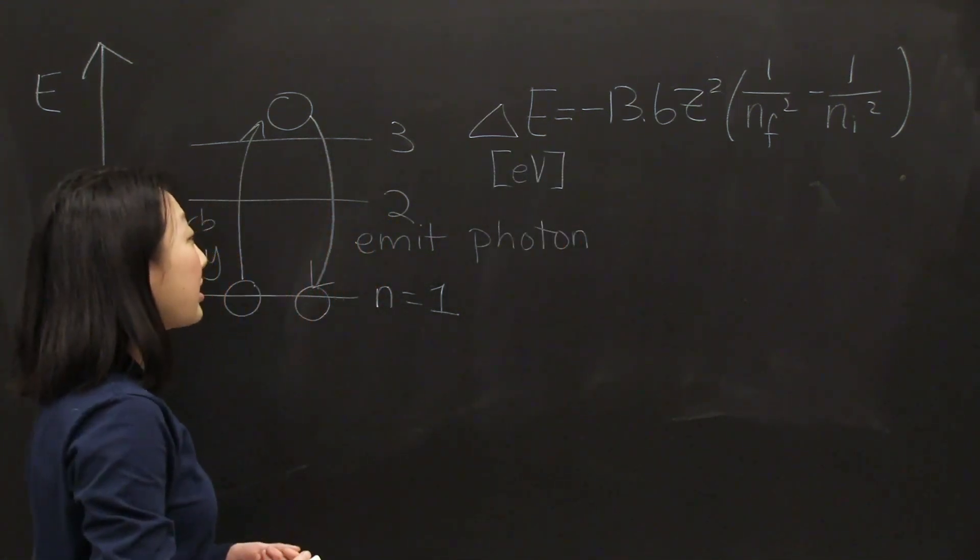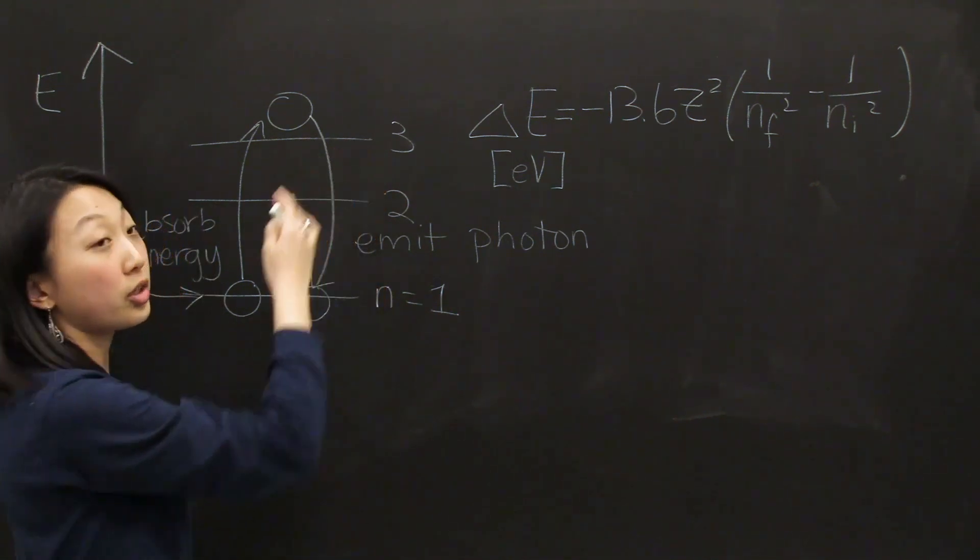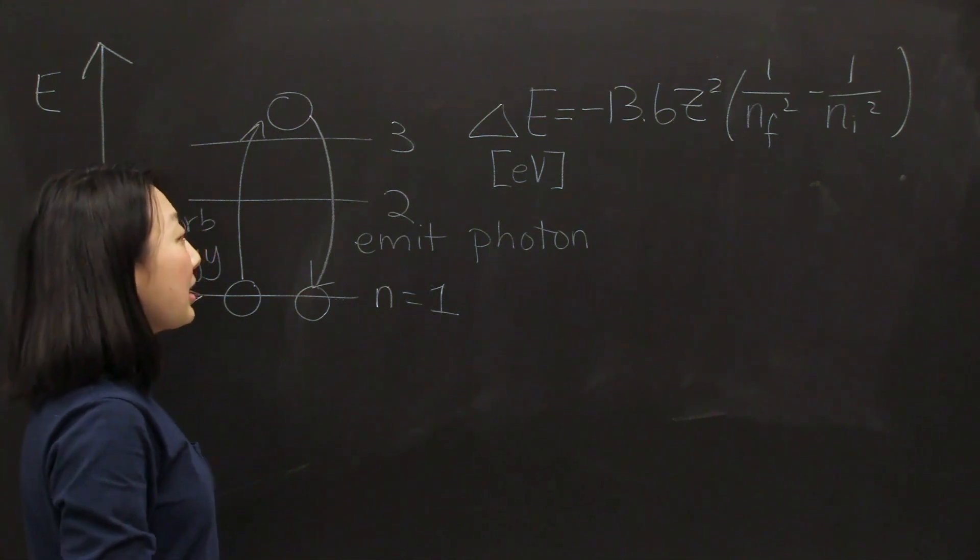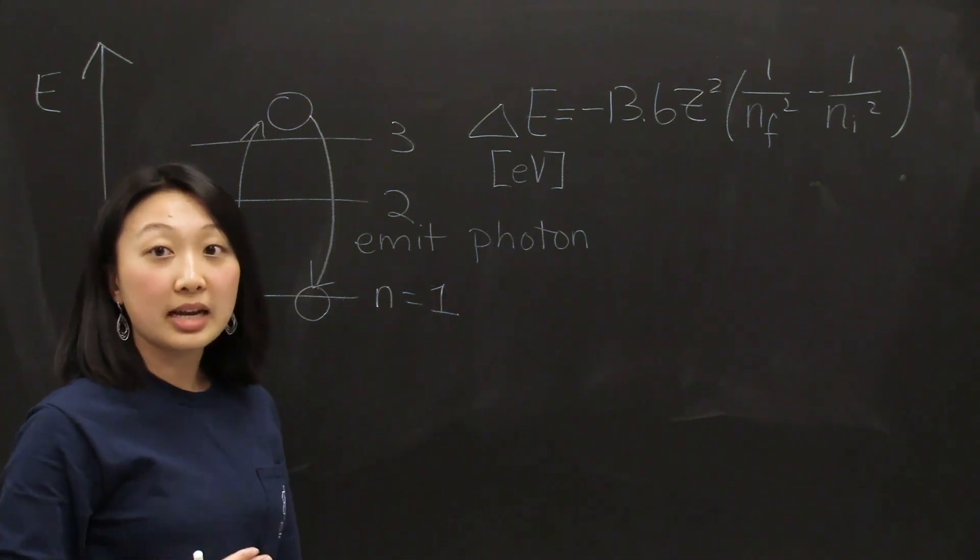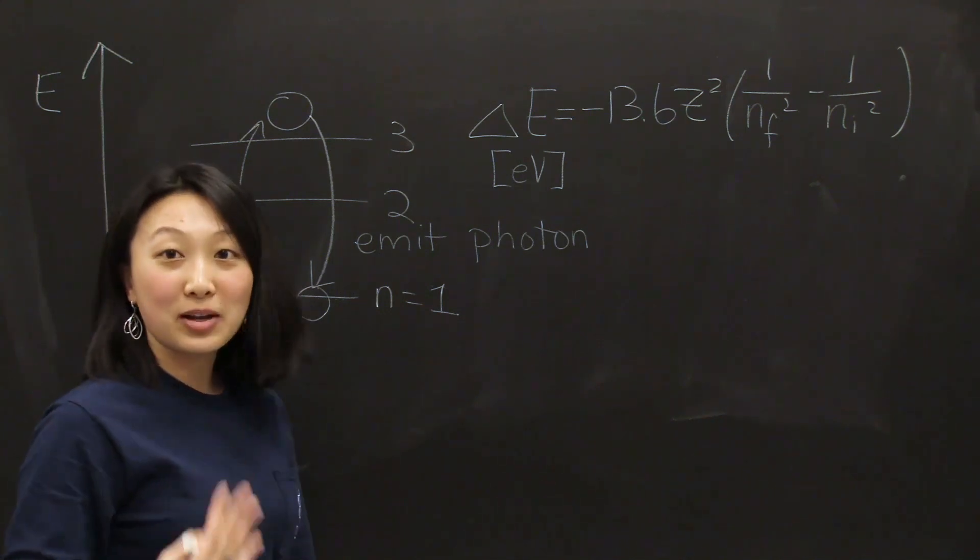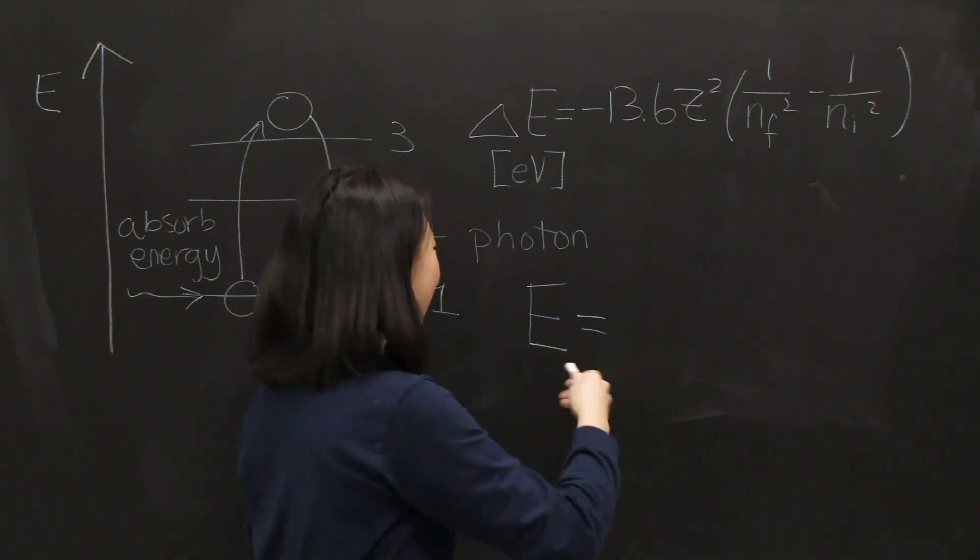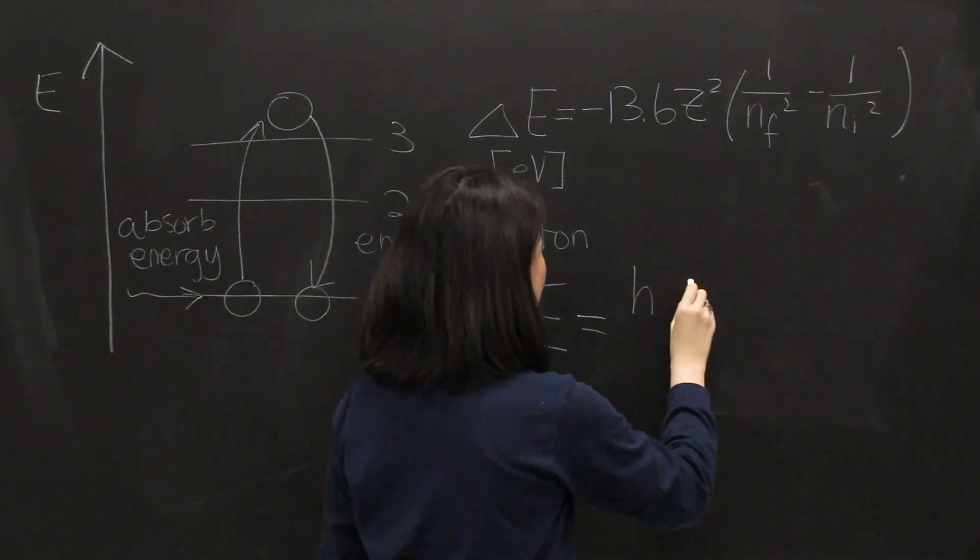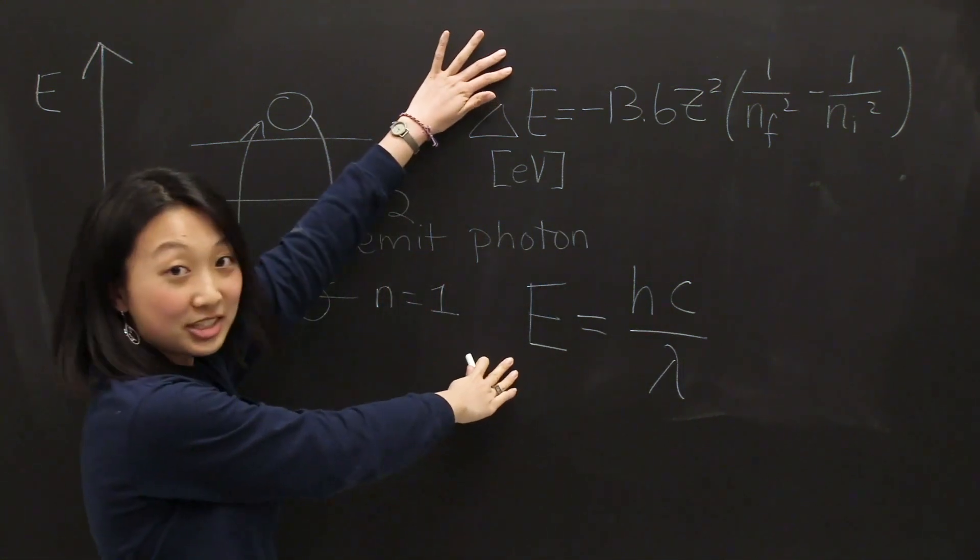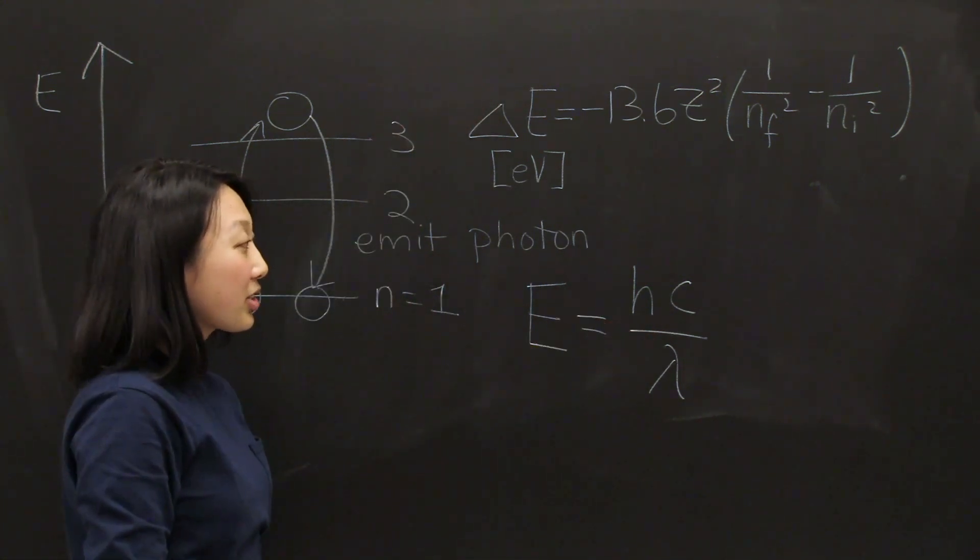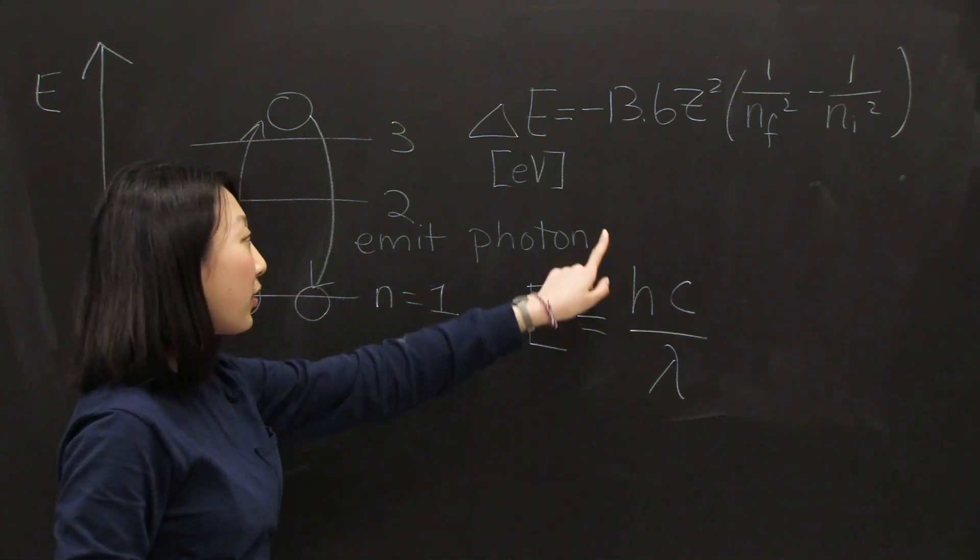So remember that these electronic transitions are quantized, since these energy levels are not continuous but they're integers. This means that the photon that the electron emits is going to have a certain set of different wavelengths, and we can see that with this equation: energy equals hc over lambda, where energy is equal to this change in energy, h is Planck's constant, c is the speed of light, and lambda is the wavelength of our emitted photon.